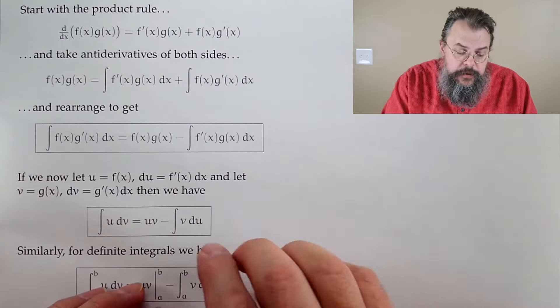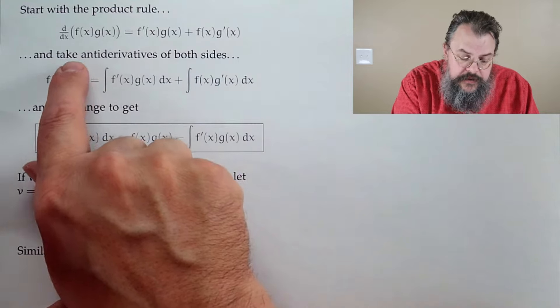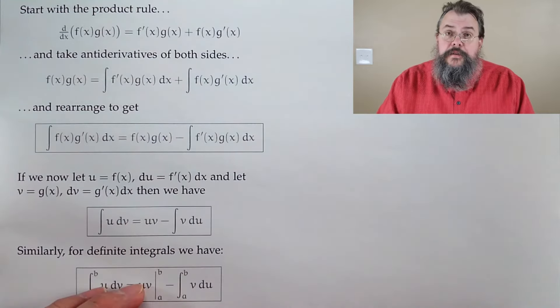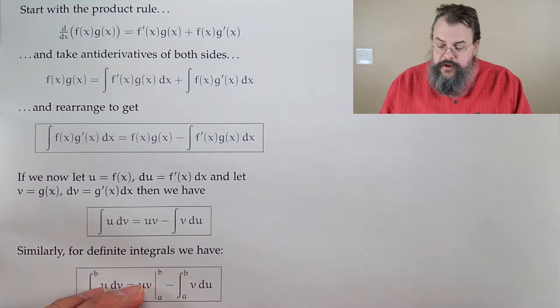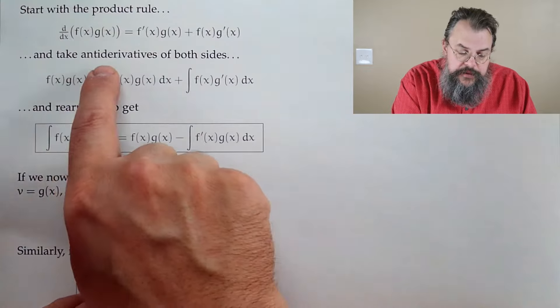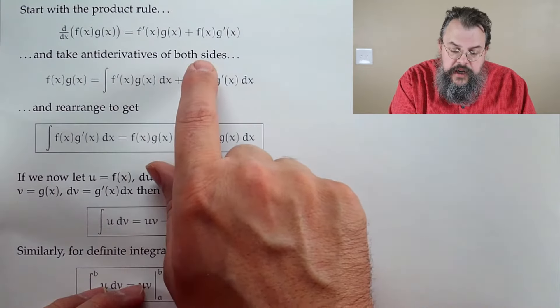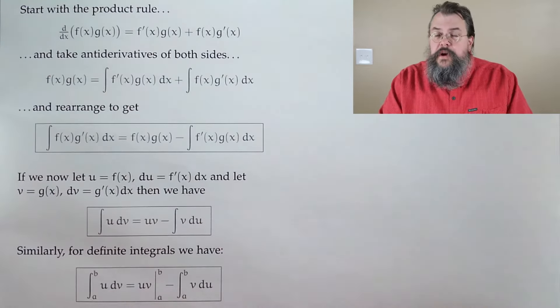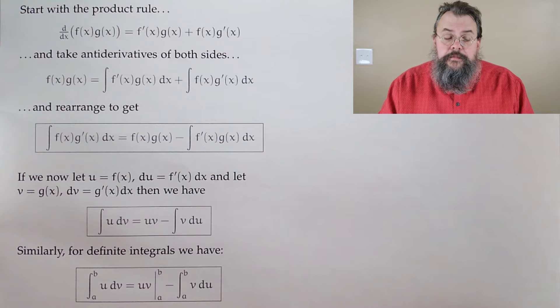We start with our product rule, which says the derivative of a product of two functions multiplying — f times g — is f′g + fg′.